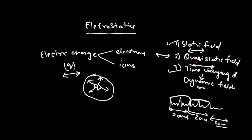So from Maxwell's equations chapter onwards, whenever I talk about a field, understand that I am referring to a quasi-static field. In the literature, many times people refer to this field as a time-varying field. There is a difference between quasi-static field and time-varying field. So from Maxwell's equations chapter onwards, whenever we talk about a field and even if it is referred to as a time-varying field, understand that it is not a purely time-varying field — it is a quasi-static field, meaning it has the nature of both static field and time-varying field.